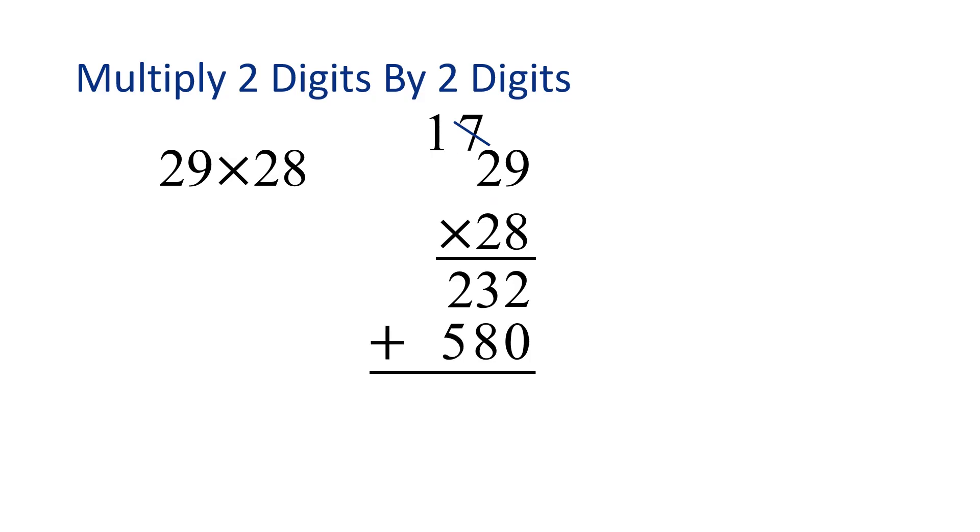So now we want to add 232 plus 580. 2 plus 0 is 2. 3 plus 8 is 11. So we'll carry a 1. And then we'll add 1 plus 2 plus 5. That's 8. We found 29 times 28 is equal to 812. Fantastic!